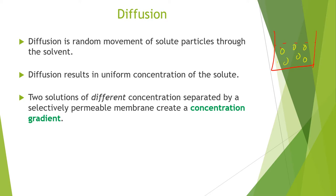For example, if these yellow spheres represent a solute dissolved in a red solvent, both particles of solute as well as solvent are randomly moving. This random motion is due to the kinetic energies of both solvent and solute molecules. The random movement of solute particles through the solvent is known as diffusion.